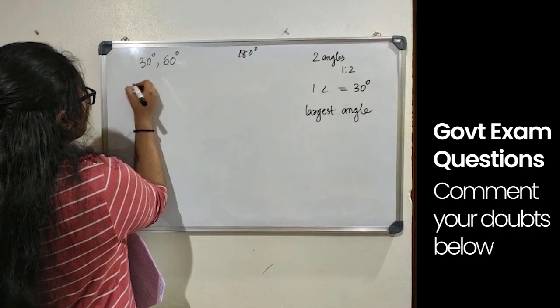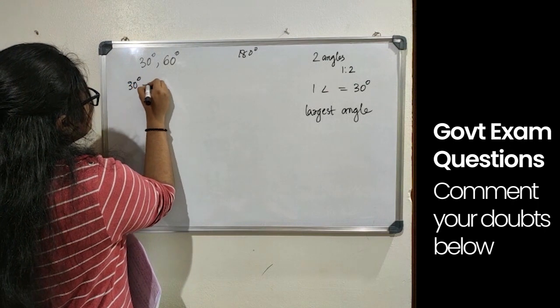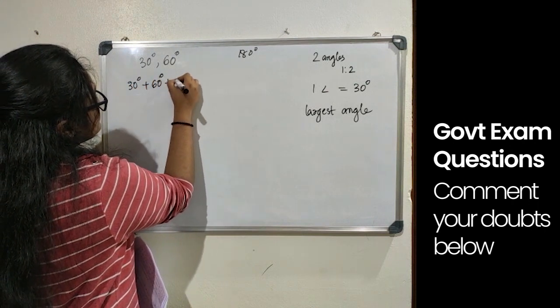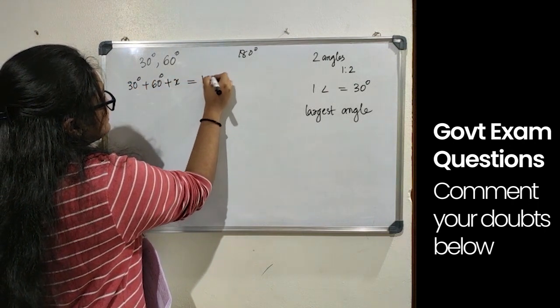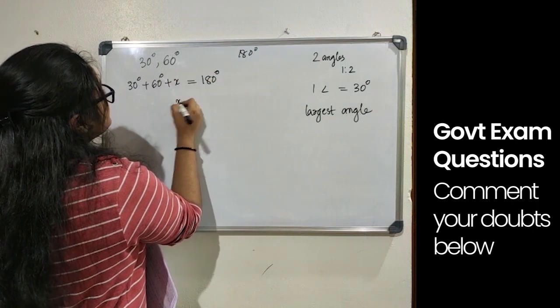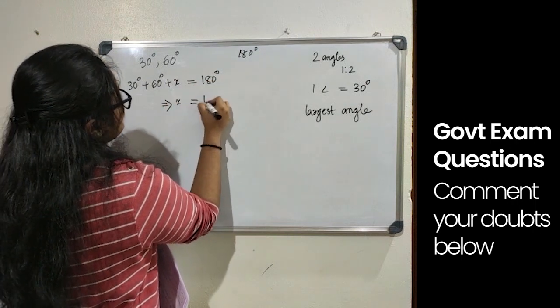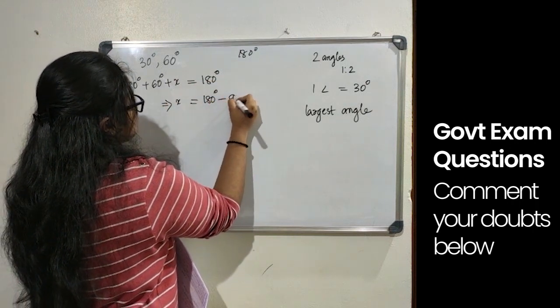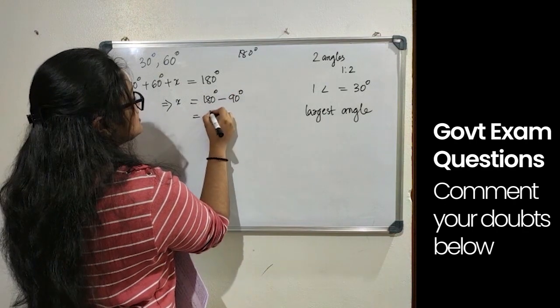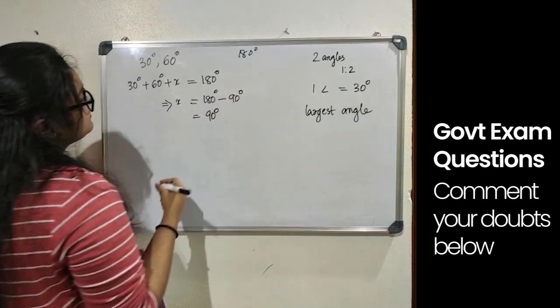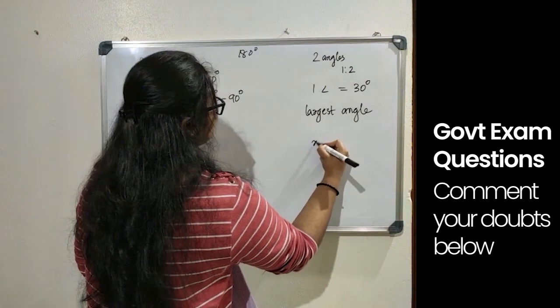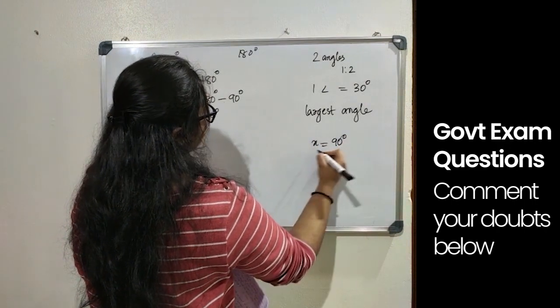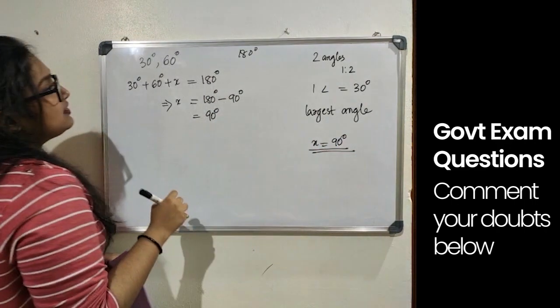We know that the sum of the angles of a triangle is 180 degree. So 30 degree plus 60 degree plus X equals 180 degree, which implies X equals 180 degree minus 90 degree, that equals 90 degree. So we get X equals 90 degree.